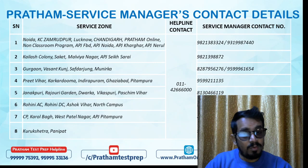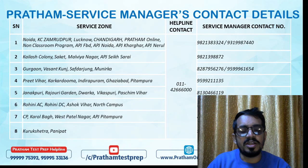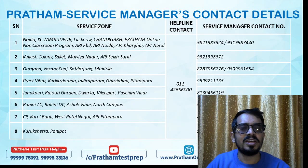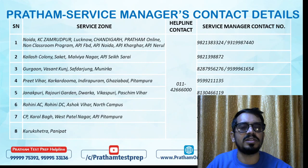An important point many students ask about: if you want to add another course after completing your first form, you don't need to fill a completely new form. Simply re-login with the same credentials and you'll see an 'Add Course' option. Click on it, make a few minor changes, and you'll get another form pre-filled with your details along with a payment gateway. Pay the 1500 rupees for the additional course and that form is done too.